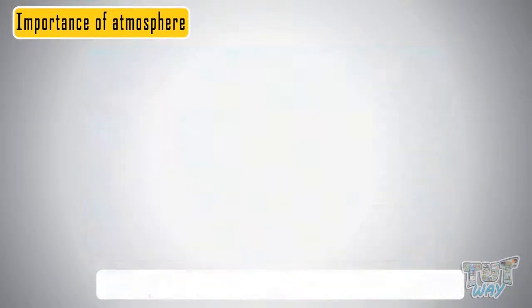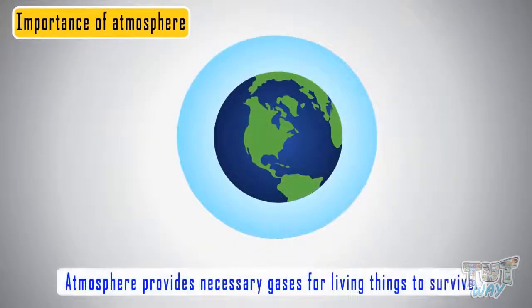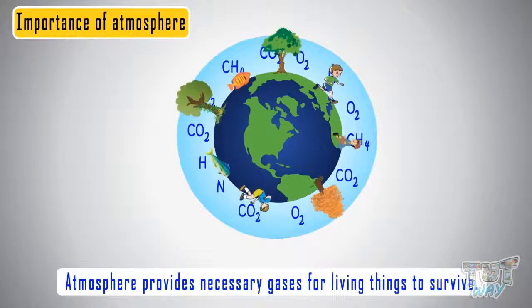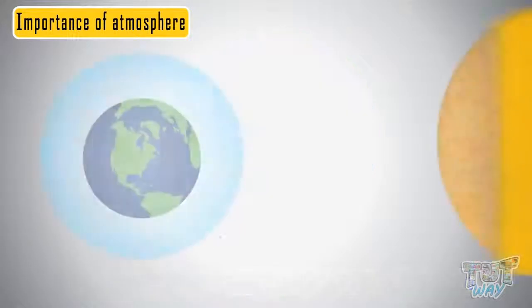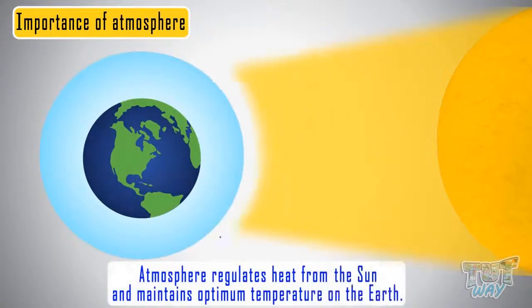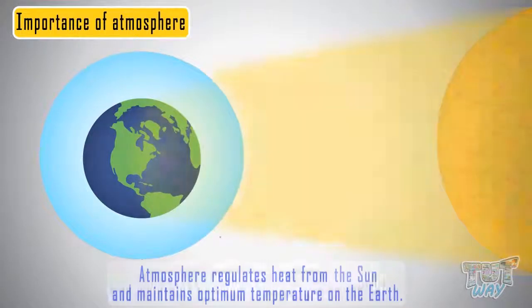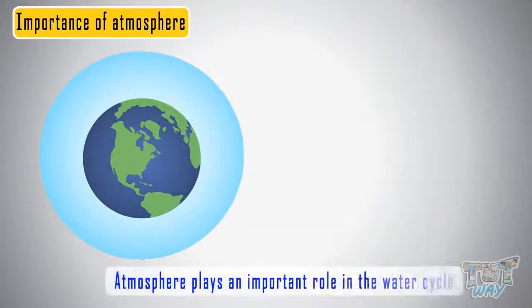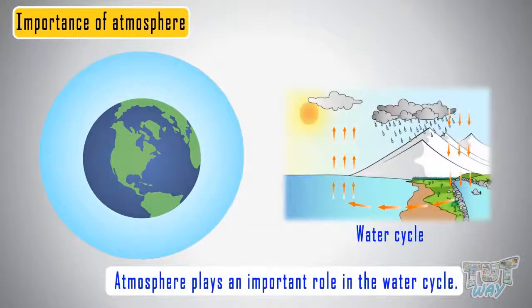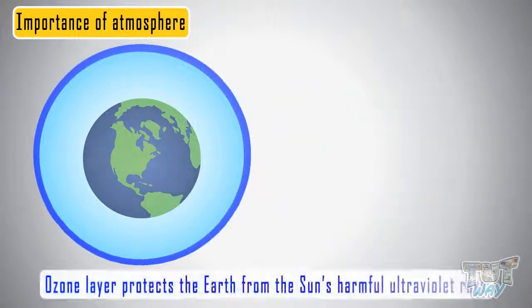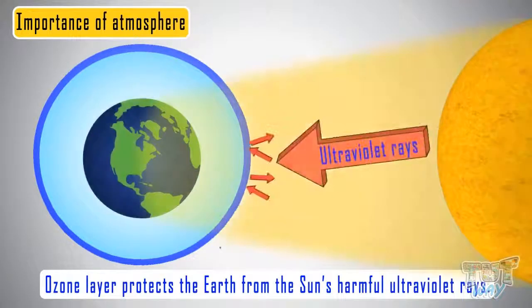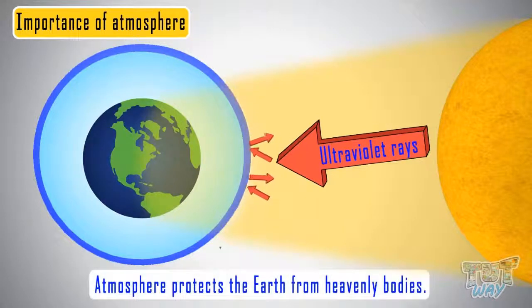So kids, it's the atmosphere that provides necessary gases for living things to survive. And it's the atmosphere that regulates the heat from the Sun to just the right temperature on Earth. And it's the atmosphere that plays a very important role in water cycle too. And it's the ozone layer of atmosphere that protects the living things from the harmful UV rays. Our atmosphere also protects us from heavenly bodies like meteors.